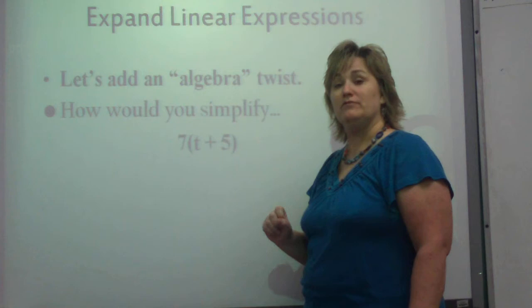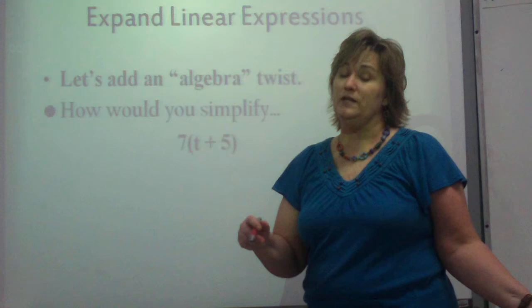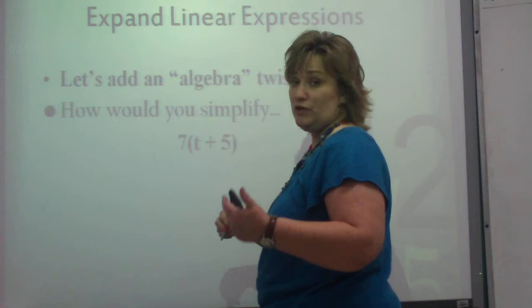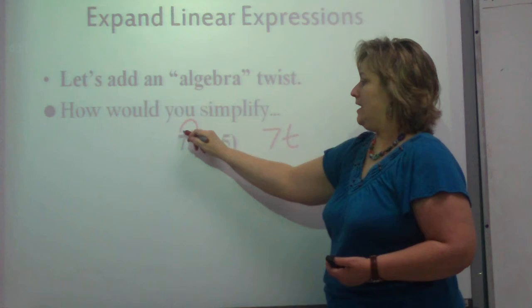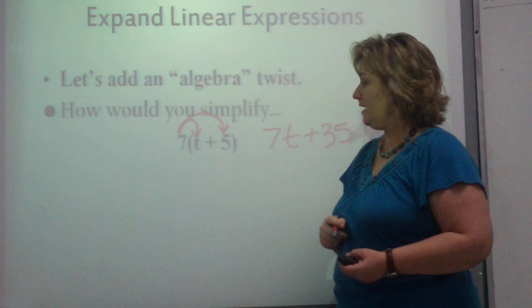So let's put the algebra twist in it. Okay? How would you simplify this? 7 times t plus 5. How would we simplify that to get rid of these parentheses? Because we don't really need to solve an algebra equation without getting rid of those parentheses. So you would still distribute. So you would say 7 times t is 7t. And 7 times positive 5 is positive 35.